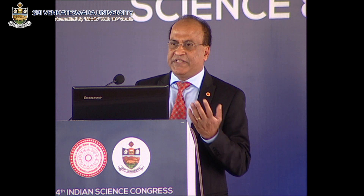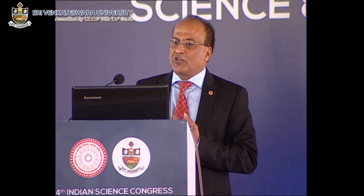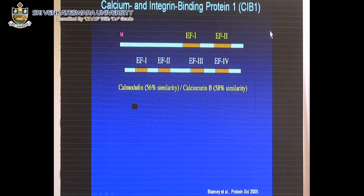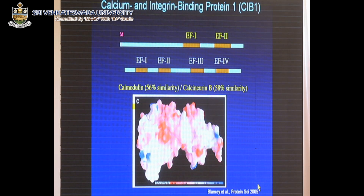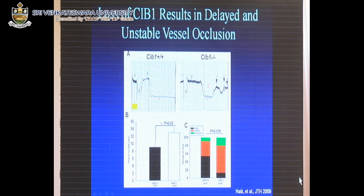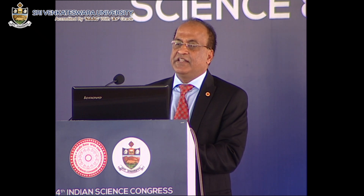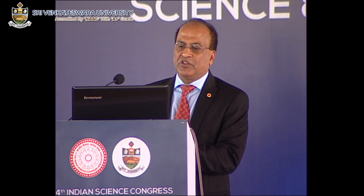Once JAM-A inhibition is removed, a protein called calcium and integrin binding protein 1 (CIB1) — which, as the name suggests, binds integrin and is a calcium binding protein — becomes active. We solved its crystal structure. When we generated a CIB1 knockout mouse, we observed unstable thrombus formation, demonstrating that CIB1 is needed for stable thrombus formation.